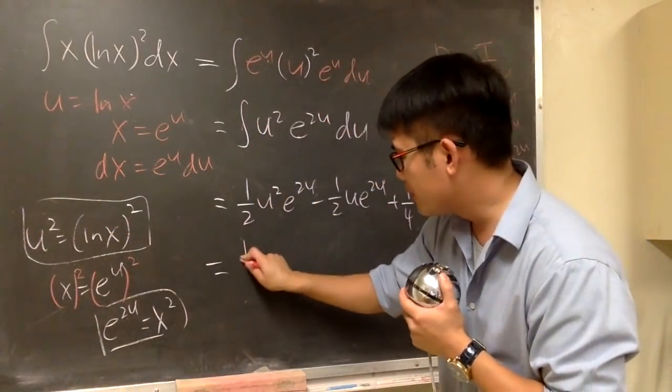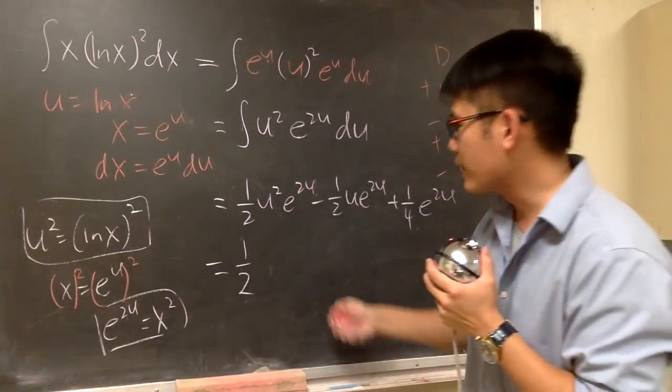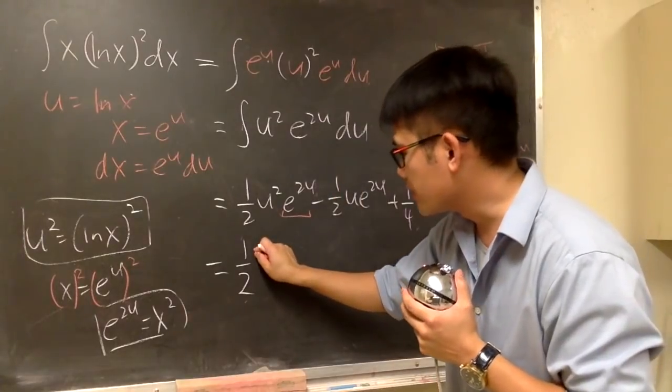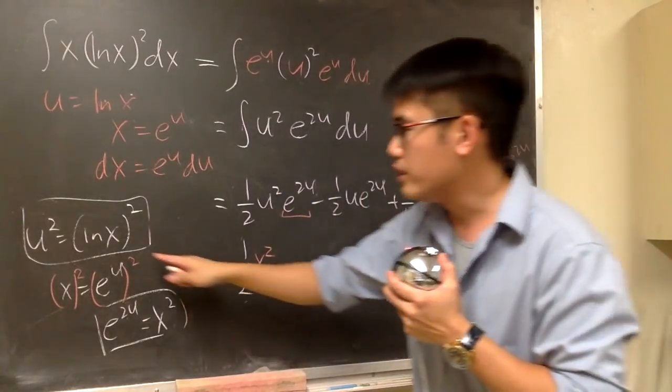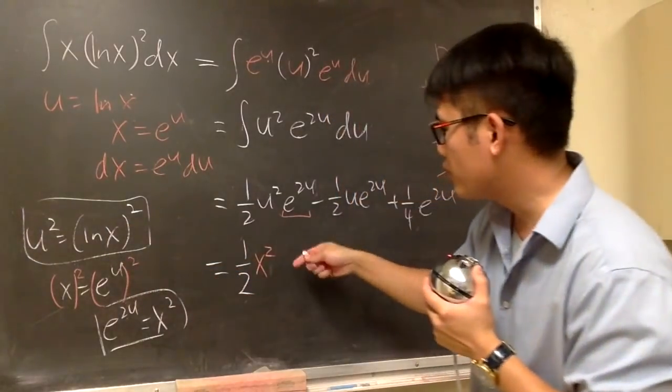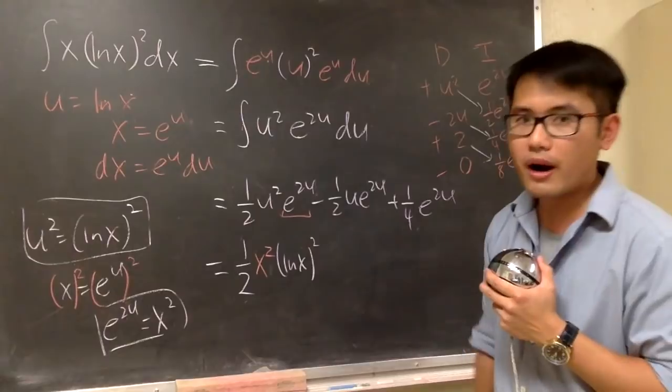So now let me put down 1 half. And you know e to the 2u is going to give you x squared. And let's put that down first, okay? So this right here I'll write it down in red. So this is going to give us x squared. And then for the u squared, we know this is ln in the parentheses and then square. So let me put this down in white. So that's it for the first part.